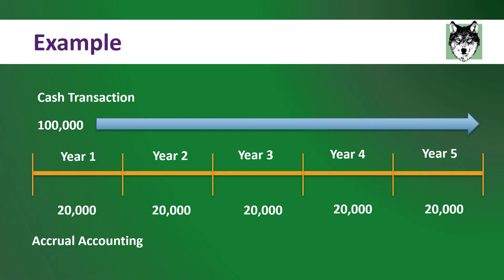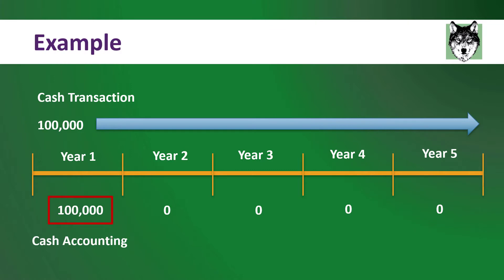Now take this example and imagine you didn't use depreciation. You would not be using accrual accounting. You would record massive amounts of expense in year one, but that's not really accurate because you're using that asset for the next five years. Years two through five would also not be accurate because you're reporting no expense at all.